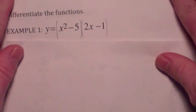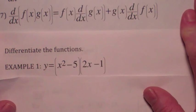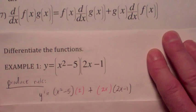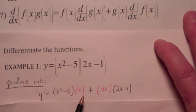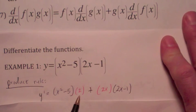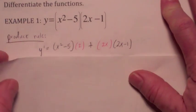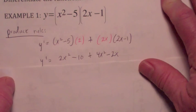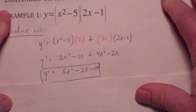For this first function, to differentiate using the product rule, the first function stays the same. You multiply by the derivative of the second, so it would be x squared minus 5 times 2, plus the derivative of the first, which becomes 2x, and keep the second function the same. Then when you simplify — multiply everything out and combine like terms — you get 6x squared minus 2x minus 10.